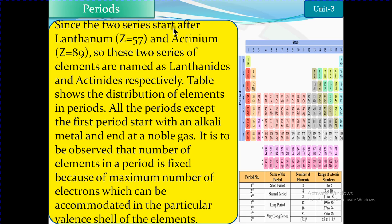Since the two series started after lanthanum (atomic number 57) and actinium (atomic number 89), these two series are named lanthanides and actinides respectively. An important point: all periods except the first period start with an alkali metal — like lithium, sodium, potassium — and end with a noble gas. Only the first period, containing hydrogen and helium, is the exception.